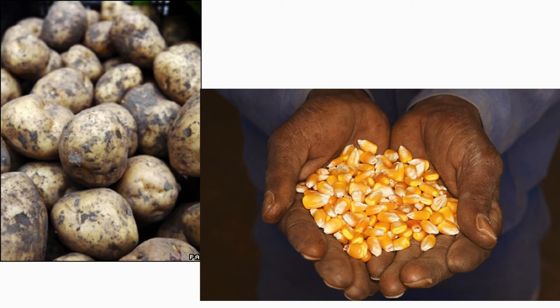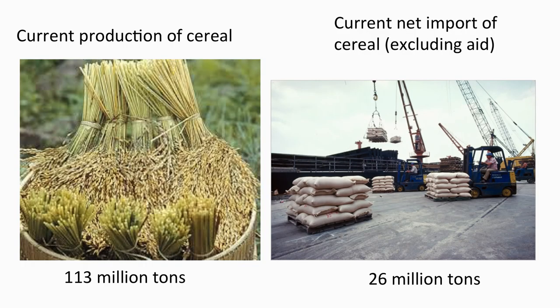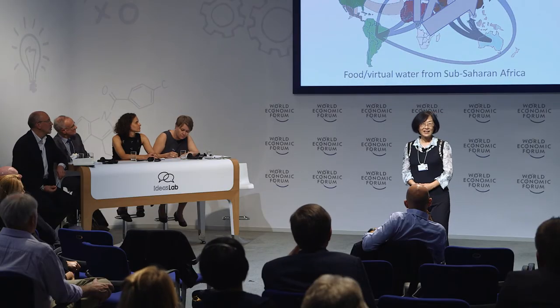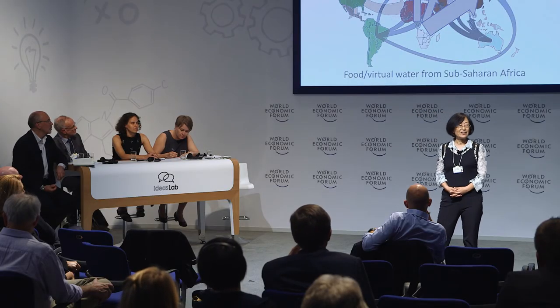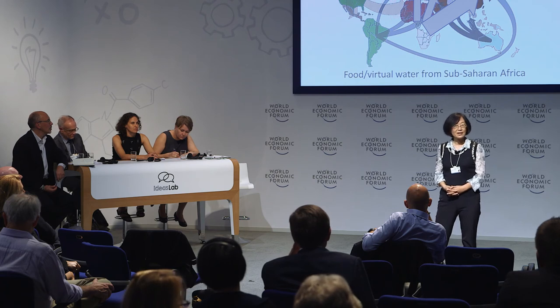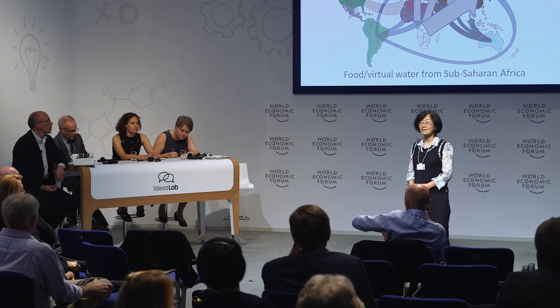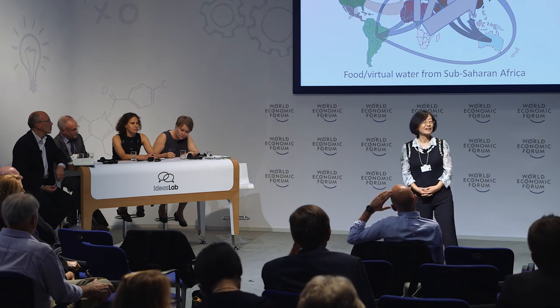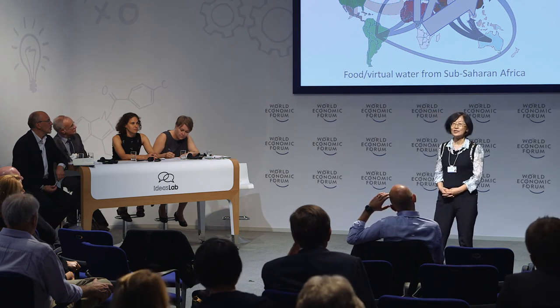We know how to improve yield in sub-Saharan Africa. If we can double the yield, sub-Saharan Africa would not need to import cereal anymore. If we can triple the yield, there will be a surplus for export. With many regions facing water scarcity and increasing production becoming more costly, sub-Saharan Africa is a new source for future food and virtual water supply.